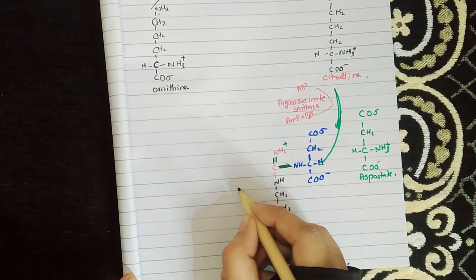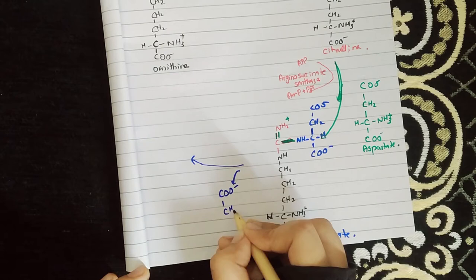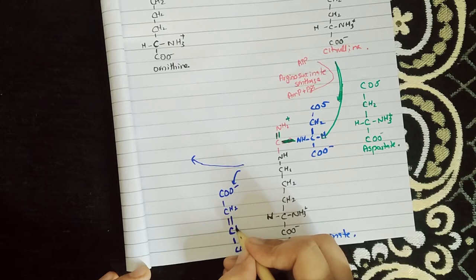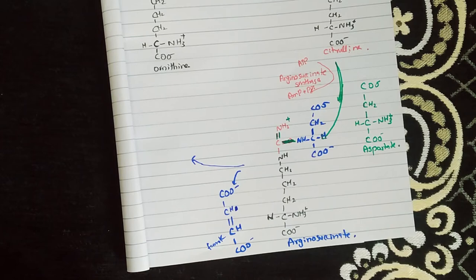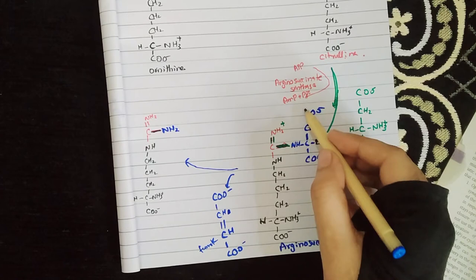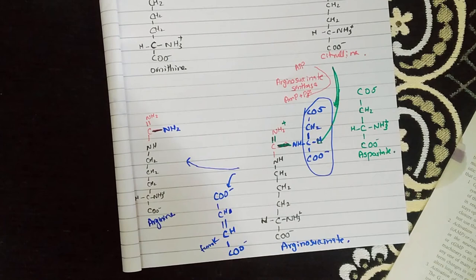From Argininosuccinate, we remove fumarate — which has the structure COO-negative, CH2, double bond, and COO-negative. After fumarate is removed, the remaining compound is called Arginine. The enzyme used is called Argininosuccinase.